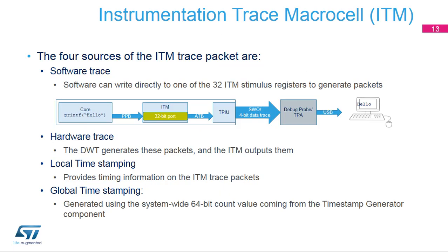The DWT is used to trigger watchpoint events caused by a match between the current data or instruction address and the contents of comparators programmed by the debugger. For address matching, the comparator can use a mask, so it can match a range of addresses. On a successful match, the comparator generates a watchpoint debug event on either the PC value or the access data address. A match on a data value can be combined with an address match. The FPB is more appropriate for implementing instruction breakpoints, because the breakpoint event occurs when the instruction is about to enter the execute unit. So if the instruction which has been fetched is discarded due to a taken branch, the breakpoint event does not occur while the watchpoint event does.